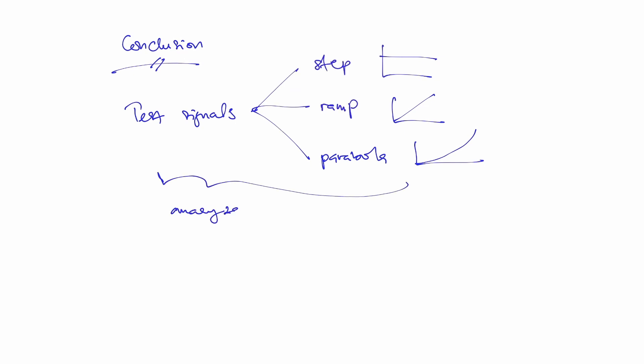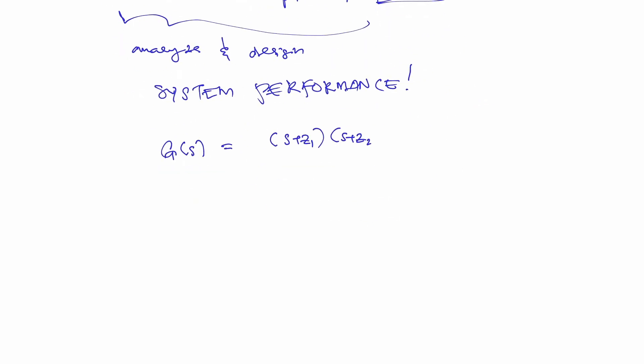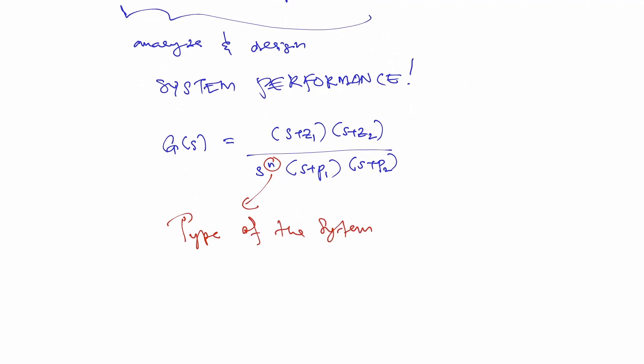The greater the number of pure integrations a system has in the forward path, the higher the degree of accuracy assuming the system is stable. We also learned that increasing the system type decreases the steady state error as long as the system remains stable.